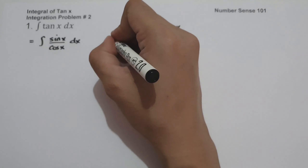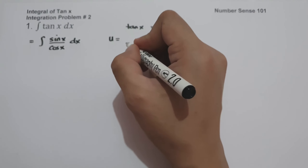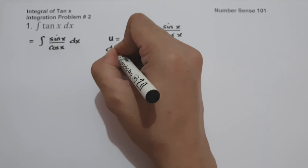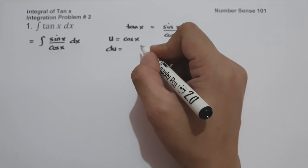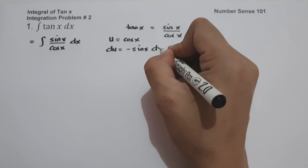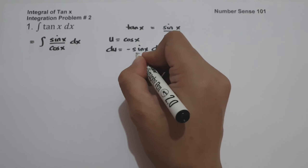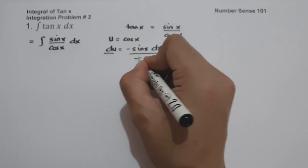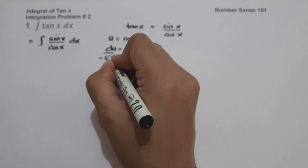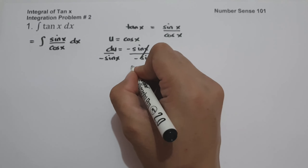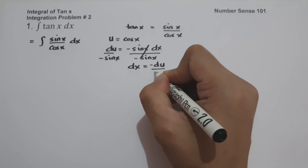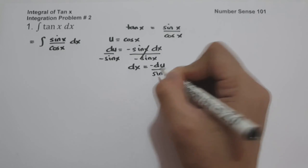And let us use u-substitution. So let us set u as cosine x, and du — the derivative of cosine x — is negative sine x dx. And to solve for dx, let us divide both sides by negative sine x. So dx will be negative du over sine x.